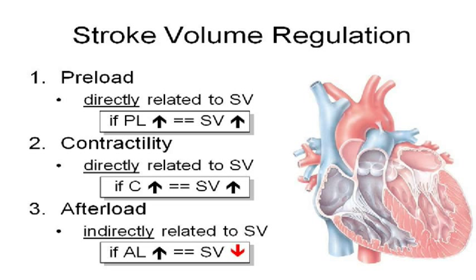The heart is having to work harder to pump the same amount of blood. Hypertension increases afterload — the pressure in the aorta is already high, so the left ventricle is having to work harder to achieve the same stroke volume.